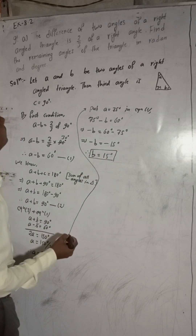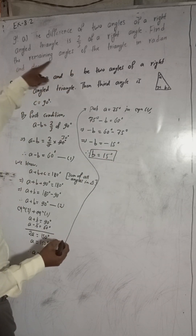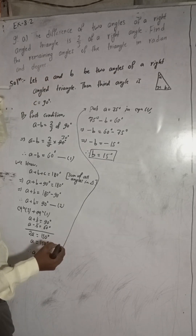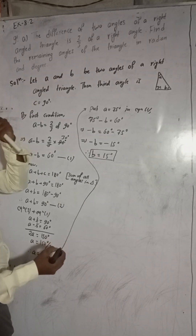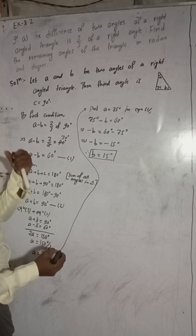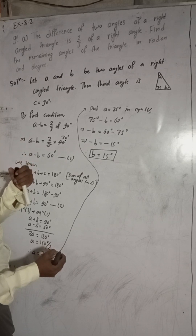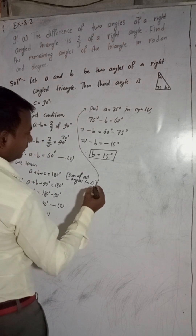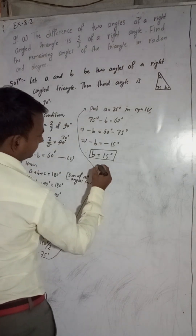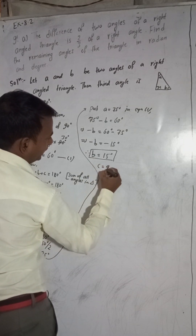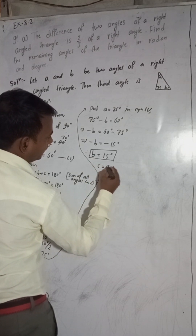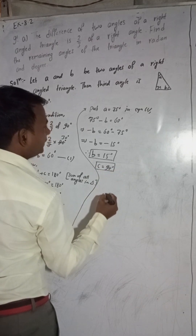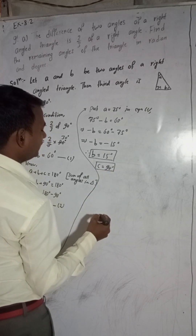We got the remaining angles. The remaining angles are A equals 75 degrees and B equals 15 degrees. The other angle is C, and C is equal to 90 degrees as given. Now in radian we have to find these angles.